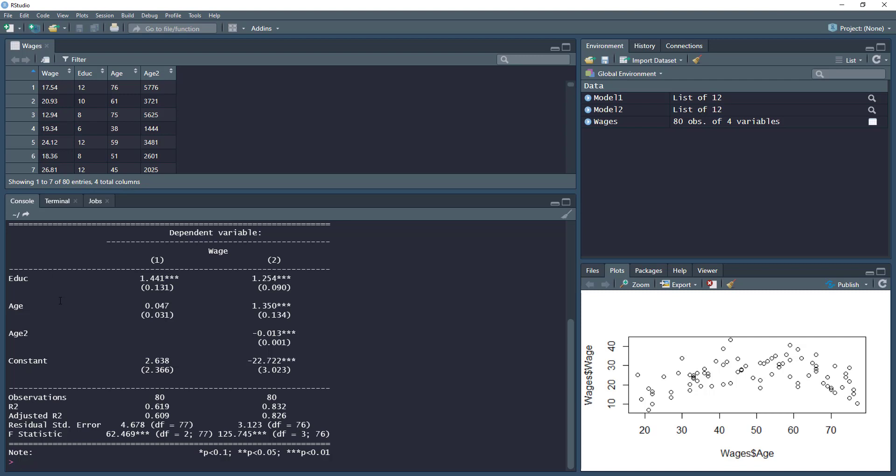Here we can see the results of our two models. We can see the information about our individual coefficients as well as our constant. We can compare observations, R², adjusted R². Because this is a multiple linear regression model, both of them are, we want to look at the adjusted R².